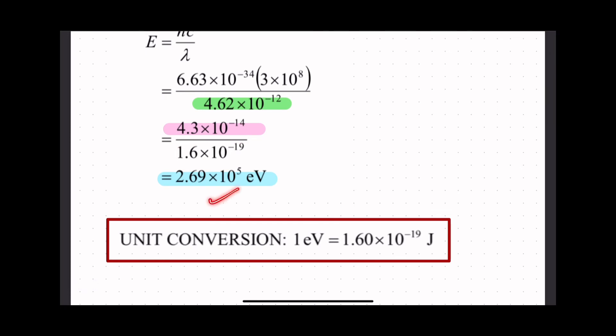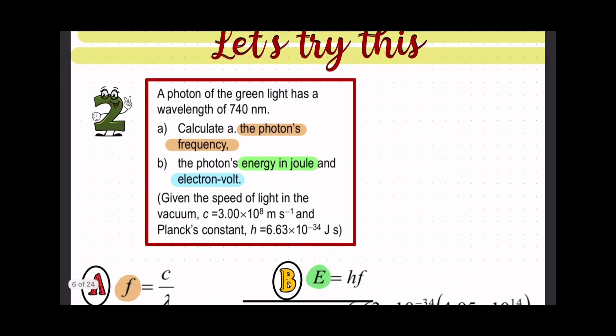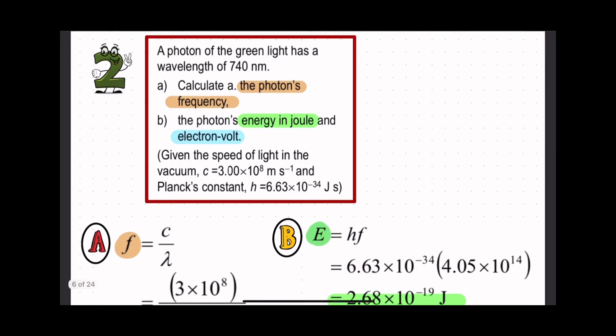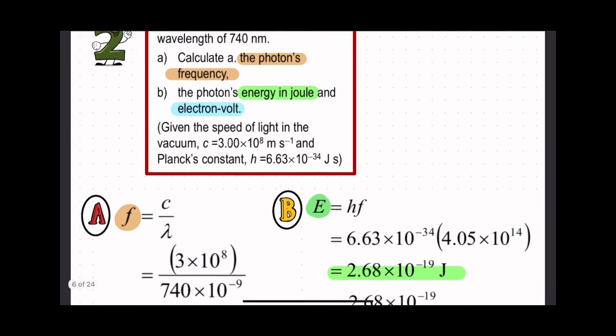Next, example two. A photon of green light has a wavelength of 740 nanometers. Calculate the photon frequency. This is the light wavelength, so to determine the photon frequency, frequency equals c over wavelength.